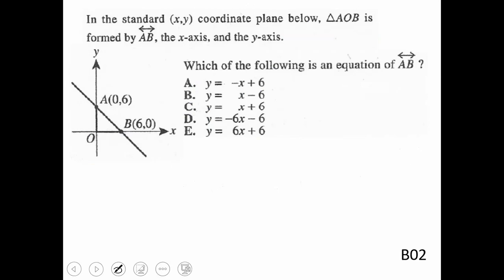A little different type of question here. We're given this triangle AOB formed by line AB, the x-axis, and y-axis. And it wants to know which of the following is an equation of AB. So on this, you want to think about your y-intercept and you want to think about your slope.